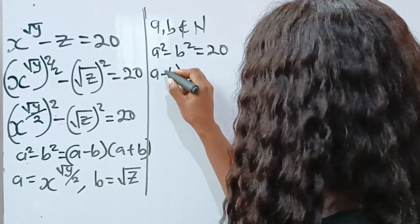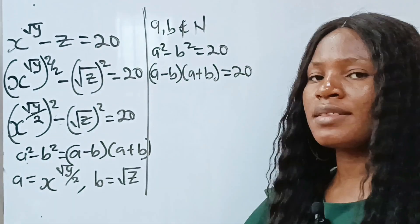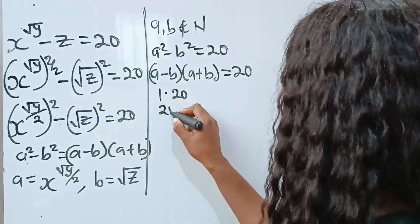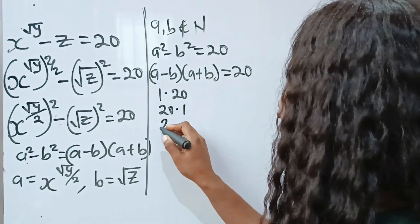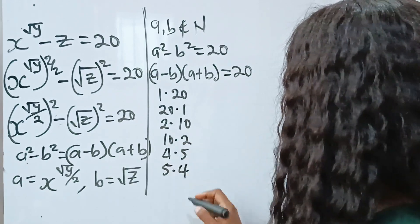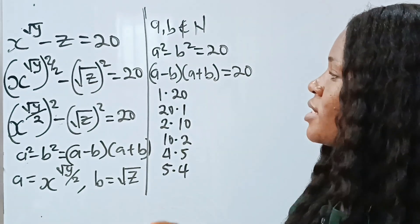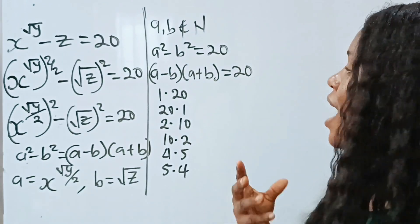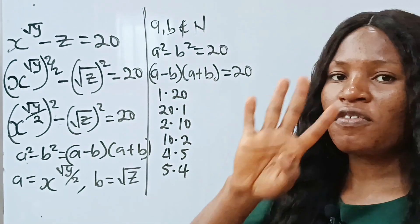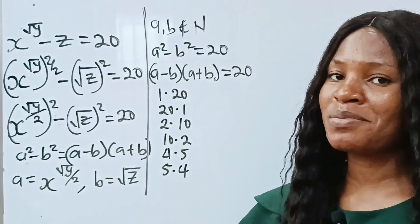We can now rewrite this equation as a squared minus b squared equals 20 — that is, a minus b multiplied by a plus b is equal to 20. There are several ways we can express 20: 1×20, 20×1, 2×10, 10×2, 4×5, and 5×4. Note that we are looking for the value of x, y, z — and not a and b.